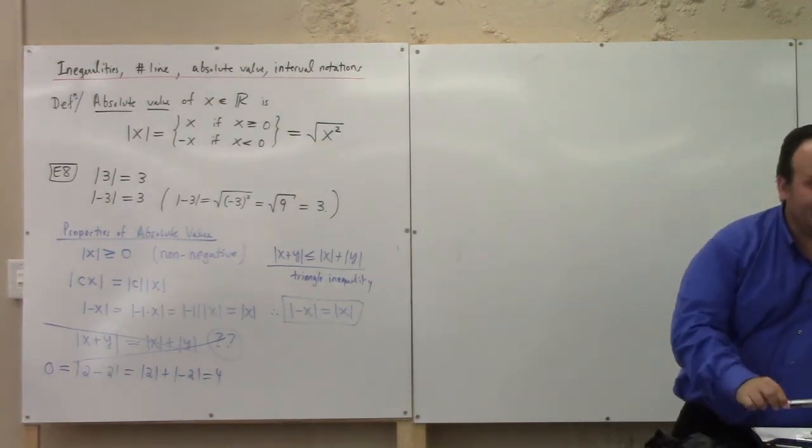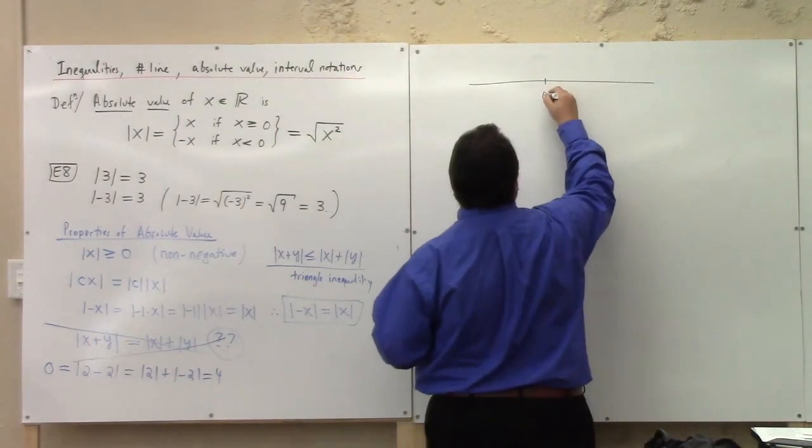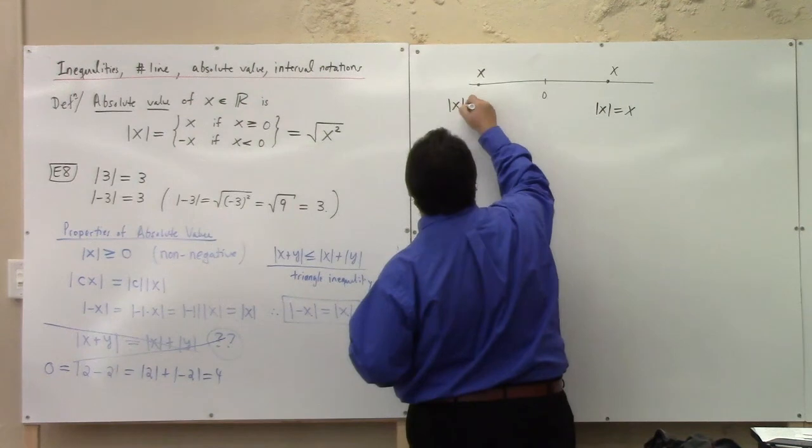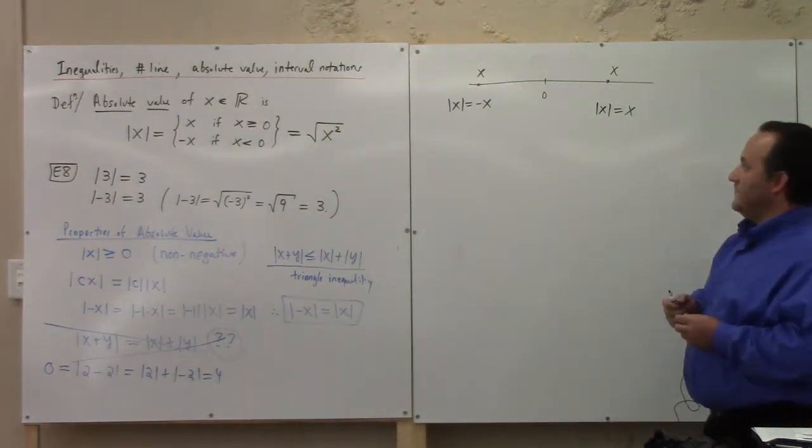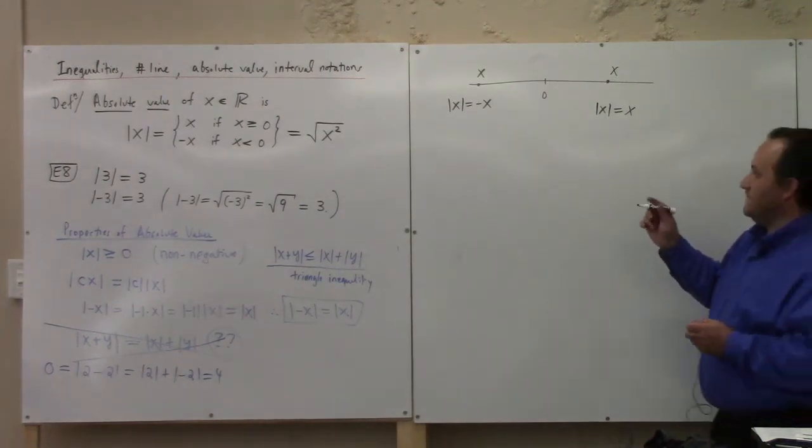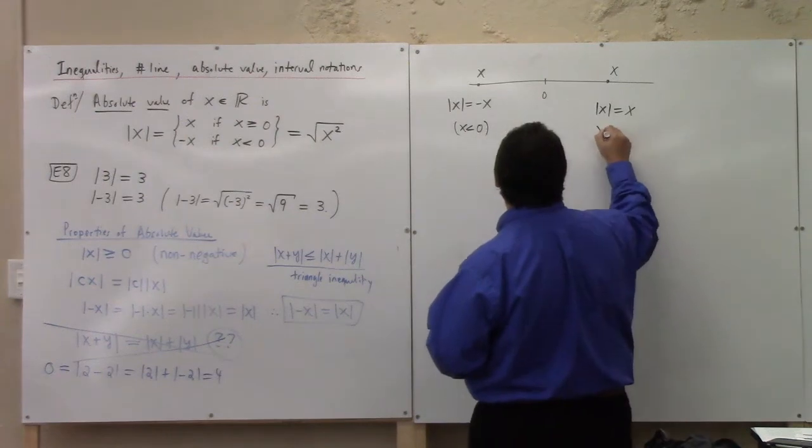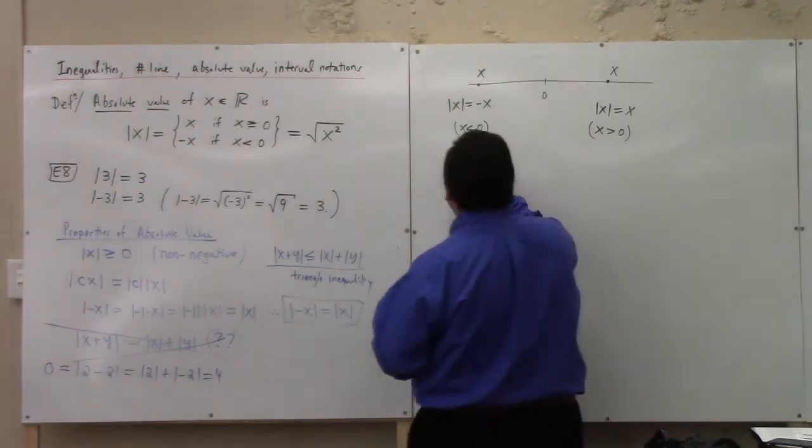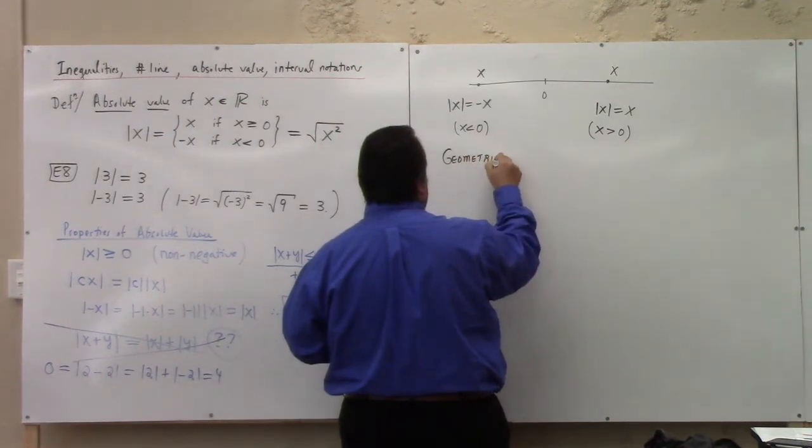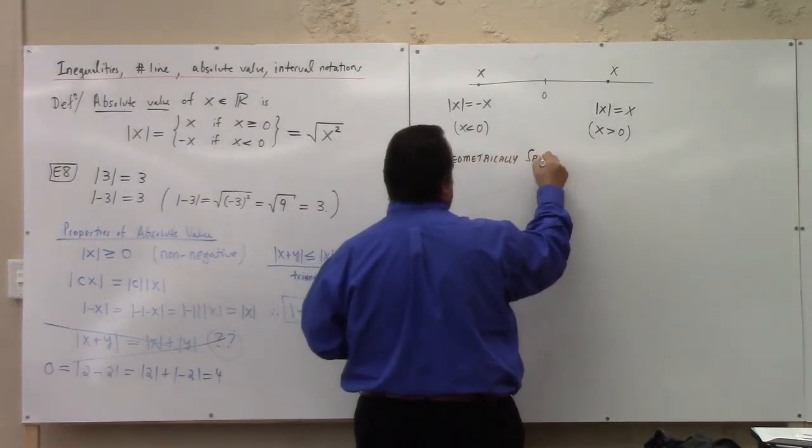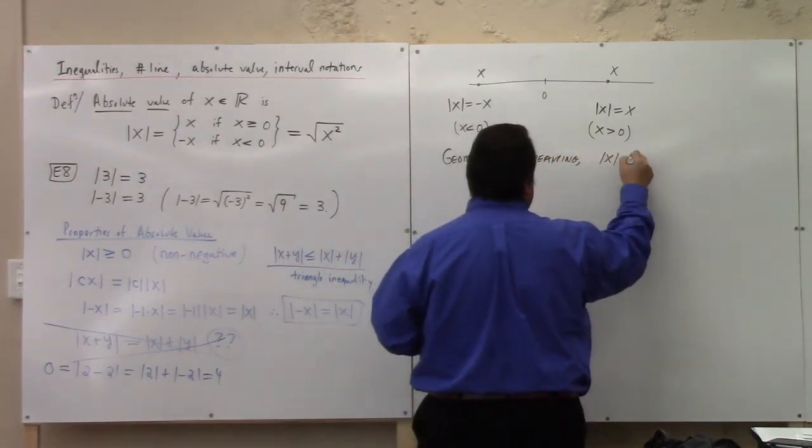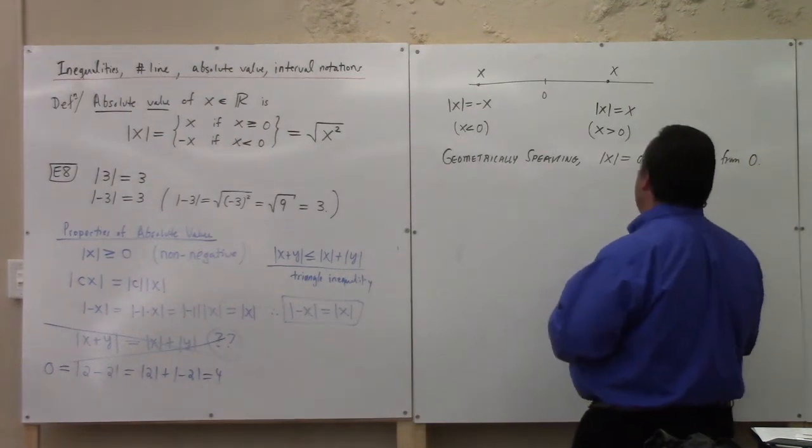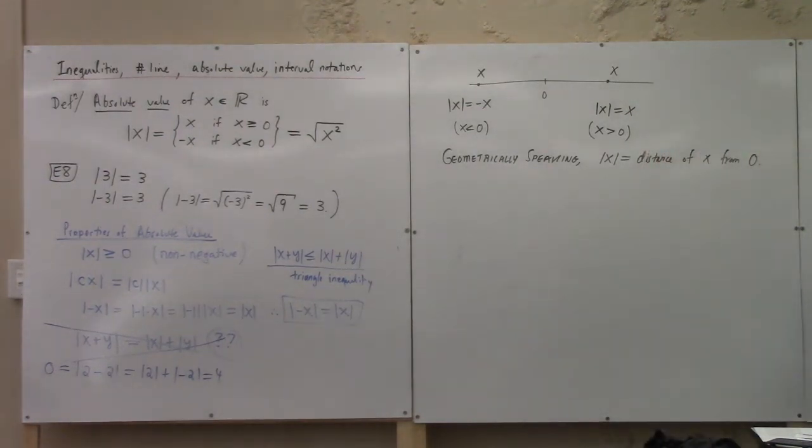It's x. Well, it could be minus x, right? I mean, here's 0. If x is over here, the absolute value of x is equal to x, right? If x is over here, the absolute value of x is equal to minus x. So, what is the absolute value of x geometrically? Geometrically speaking, the absolute value of x is equal to the distance of x from the origin, from 0. This is what absolute value is, the distance of the number from the origin.